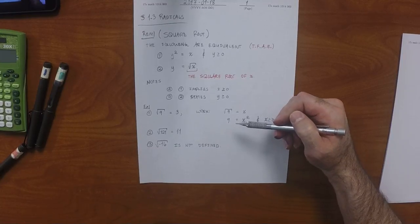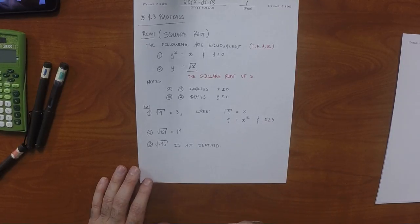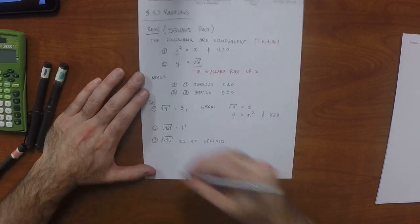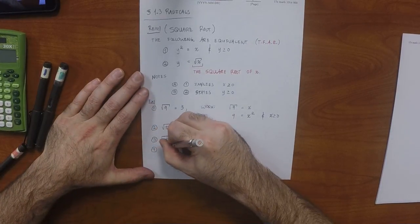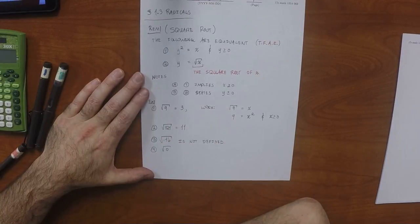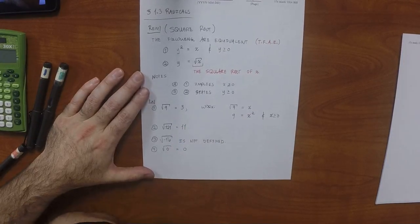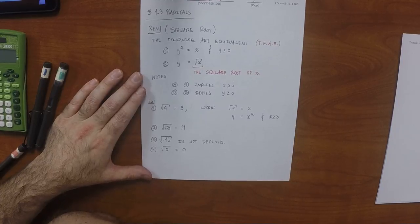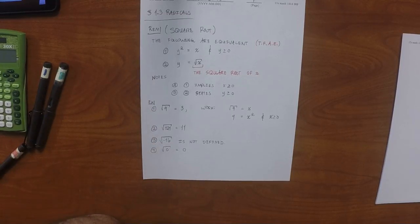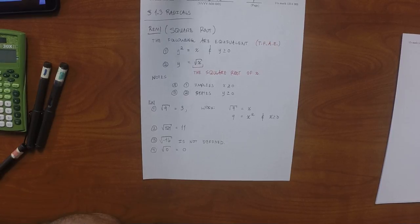You say imaginary — we'll get to that later. For the time being, the argument — the thing that gets put into the radical — must be non-negative. How about the square root of zero? Zero, because zero squared is zero. Another way to think about the square root of negative 16: can you tell me a real number that when you square it gives negative 16? There aren't any real numbers that do that, so that's why it's not defined.